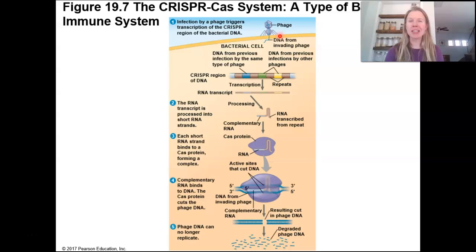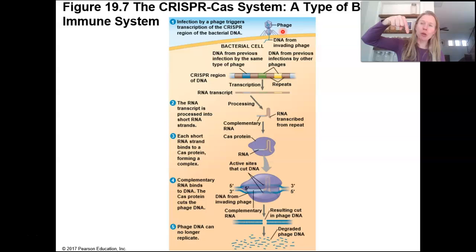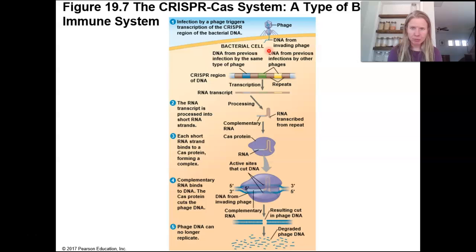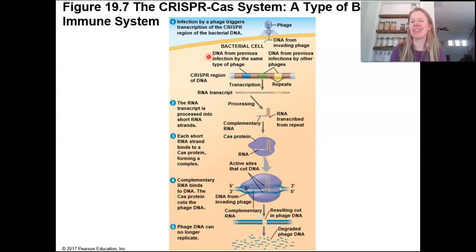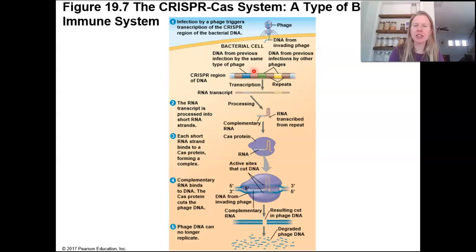Bacteria aren't super excited about these phages infecting them, which is kind of cool. Notice in this image the phage doesn't actually go into the host cell — it docks on the surface like a lunar lander, then puts out what's like a hypodermic needle and injects its DNA into the host cell. Now, you guys have heard a little about CRISPR-Cas9 — this is actually how bacteria defend themselves.